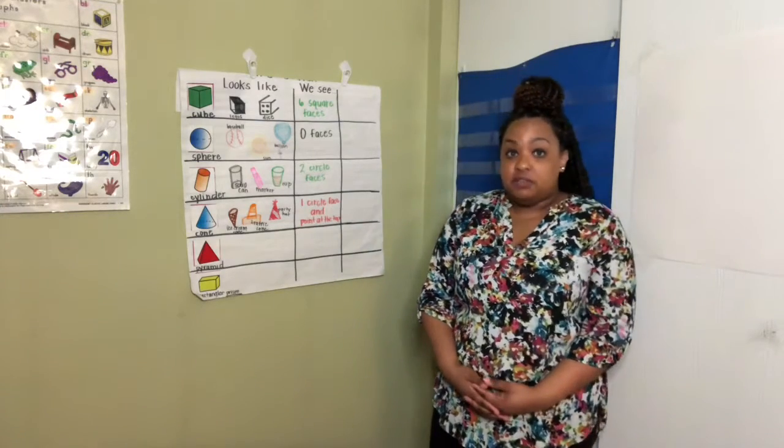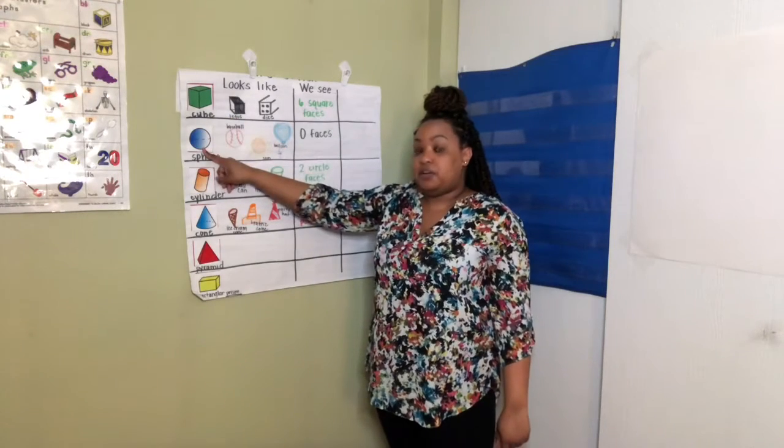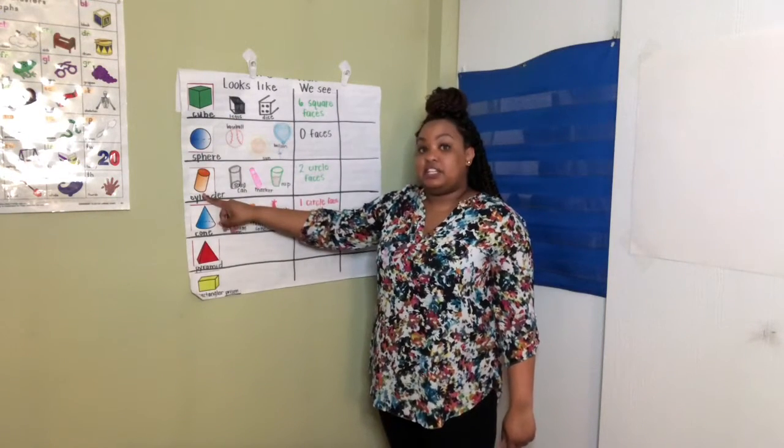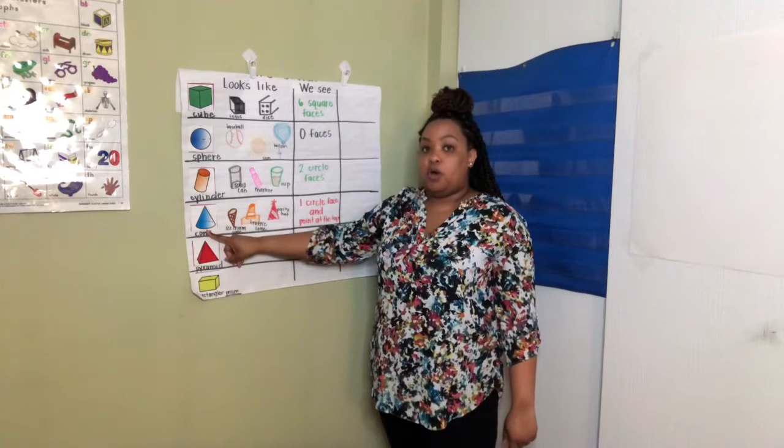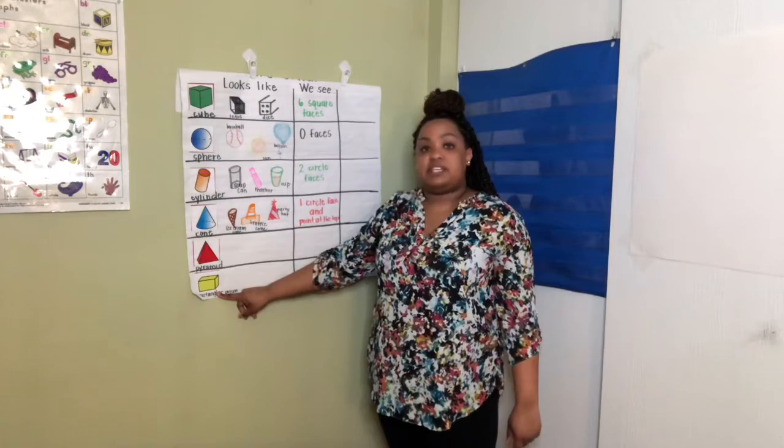The six 3D shapes are cube, sphere, cylinder, cone, pyramid, and rectangular prism.